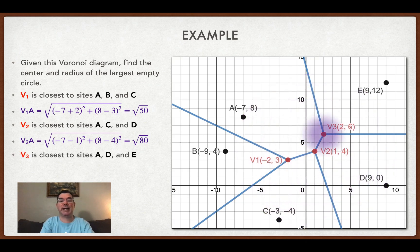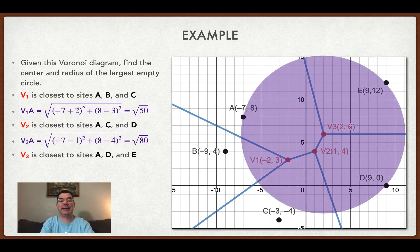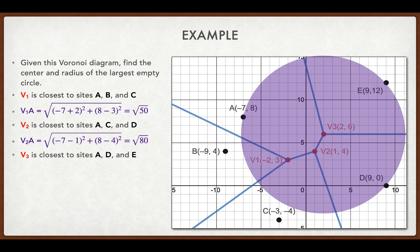And then finally, I'm looking at vertex 3 and it is equidistant from A, D, and E. Those are the closest towns to vertex 3.